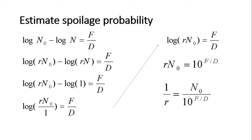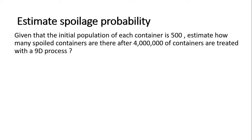We can also use this equation to estimate F, which is the thermal death time required to achieve a certain spoilage probability, if the initial population and the D value are given. The condition for using this equation is that the survivor curve should follow a first-order model. Let's look at a simple example.